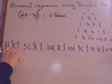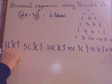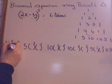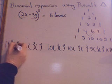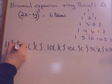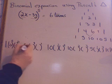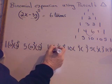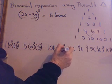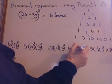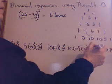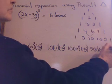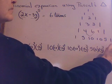Now inside each one of these parentheses I need to put something. The first one gets the 2x and the second one gets the negative 3y. So it goes: 2x and negative 3y, repeated across all six terms.